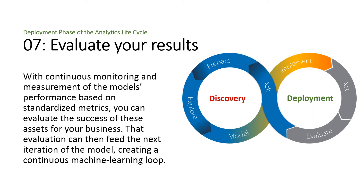Evaluate your results. The next and perhaps most important step is to evaluate the outcome of the actions produced by the analytical model. Did your models produce the correct predictions? Were tangible results realized, such as increased revenue or decreased costs? With continuous monitoring and measurement of the model's performance based on standardized metrics, you can evaluate the success of these assets for your business. That evaluation can then feed the next iteration of the model, creating a continuous machine learning loop. If you identify degradation of analytical models, you can define the optimal strategy to refresh them so they continue to produce the desired results. With increasing numbers of analytical models, automation is necessary to quickly identify models that need the most attention and even deliver automated retraining.